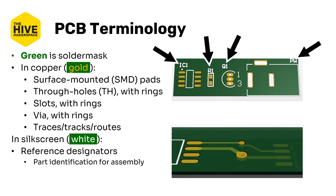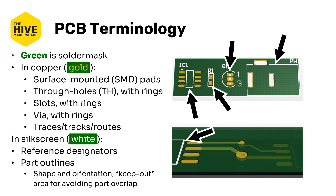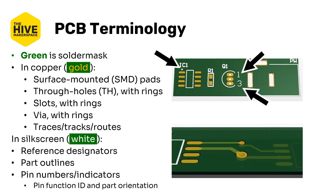The text in white is silkscreen. Modern fabrication houses can, like with solder mask, print silkscreen in a wide variety of colors, so it's not always white. It's generally used to print informational text and graphics onto the board with a non-oxidizing ink. This informational text can include reference designators, which are the part identifiers for assembly; part outlines used for orientation and avoiding part overlap; and pin numbers or pin indicators for functional referencing and part orientation. A common use case is a small dot indicating pin 1 of an IC, which we can see on the upper left as IC1.